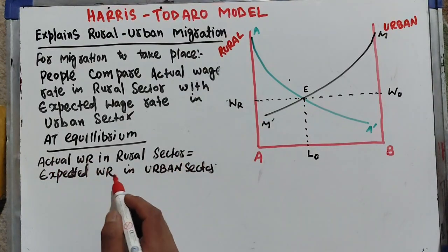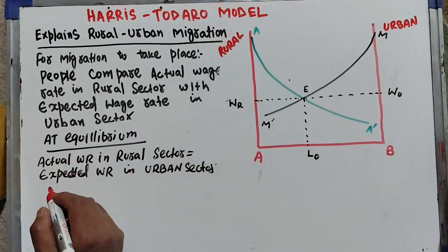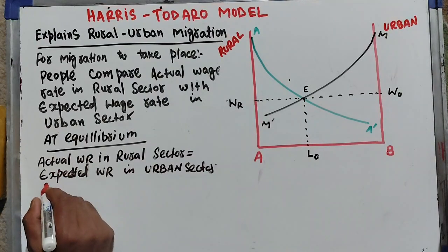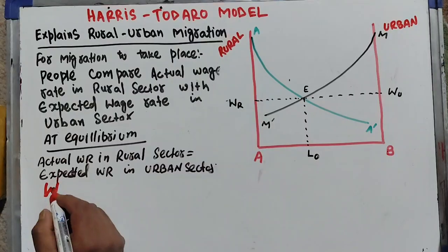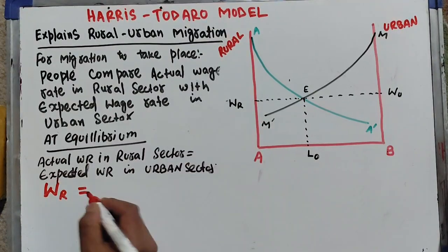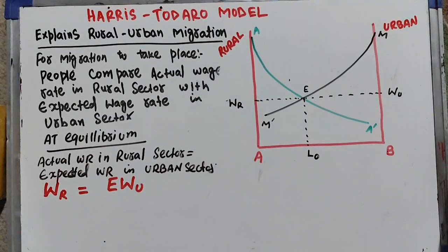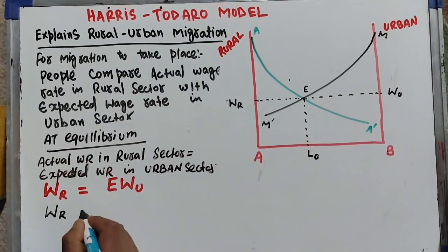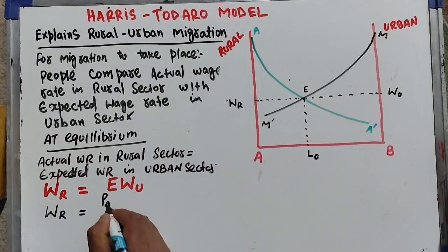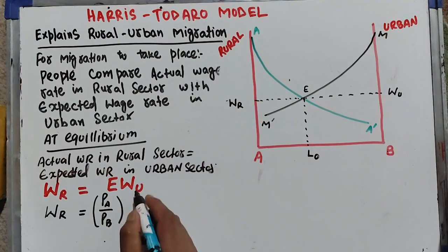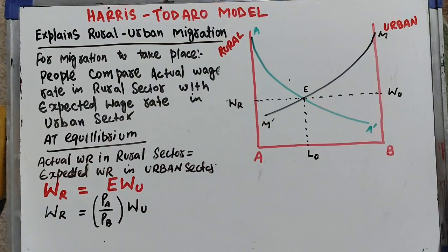The true equilibrium condition is that the actual wage rate in the rural sector (WR) should equal the expected wage rate in the urban sector. The expected wage rate in the urban sector equals (PA / PB) times the actual wage rate in the urban sector. This condition must hold at equilibrium.